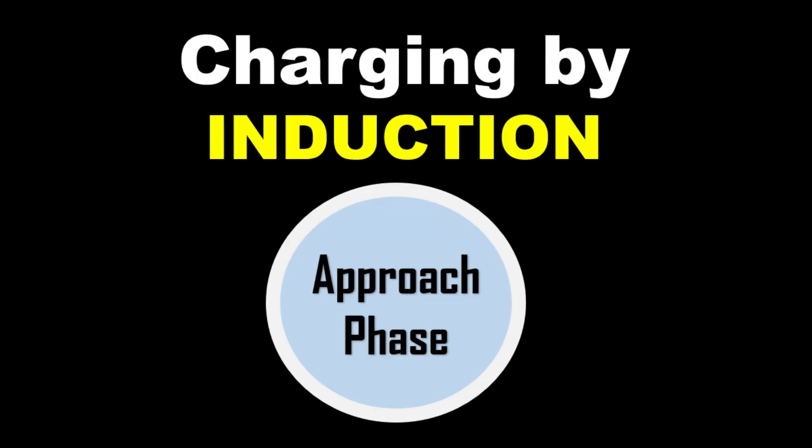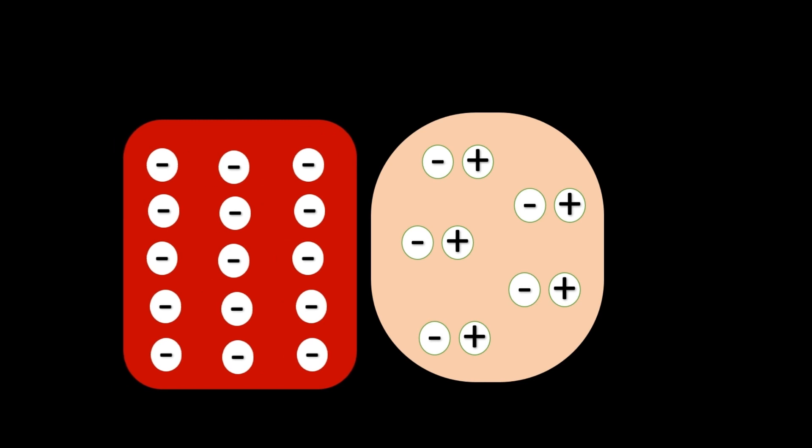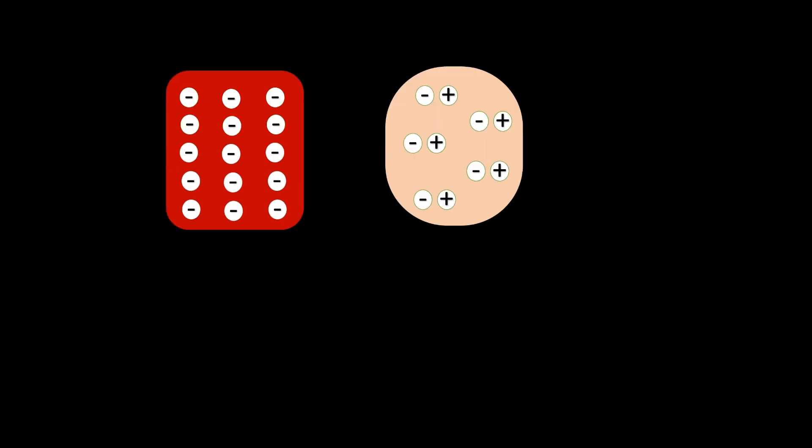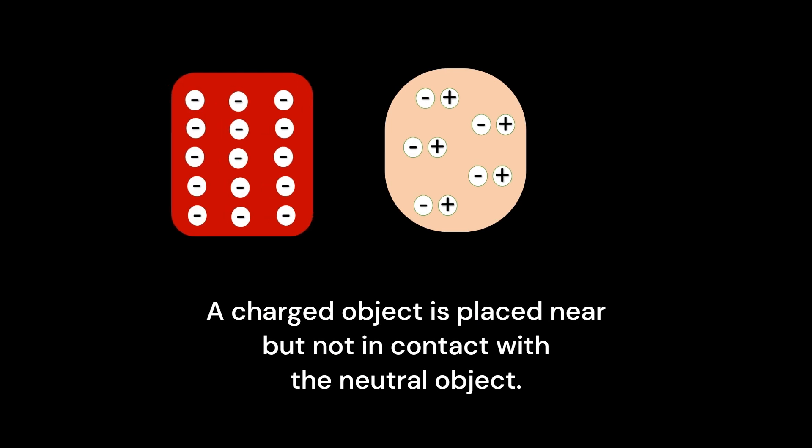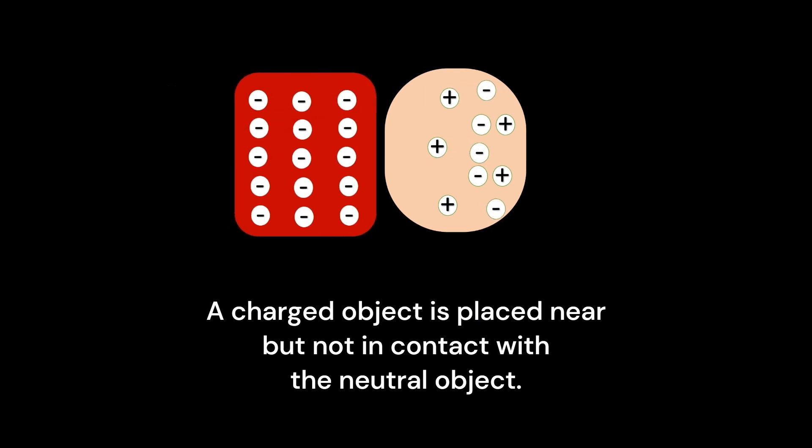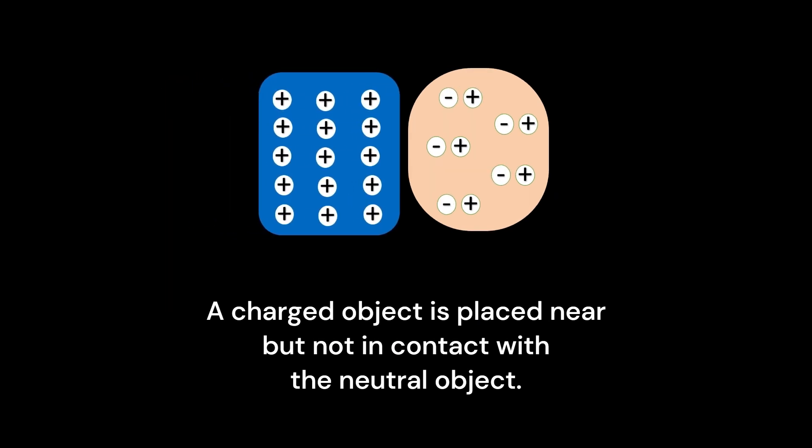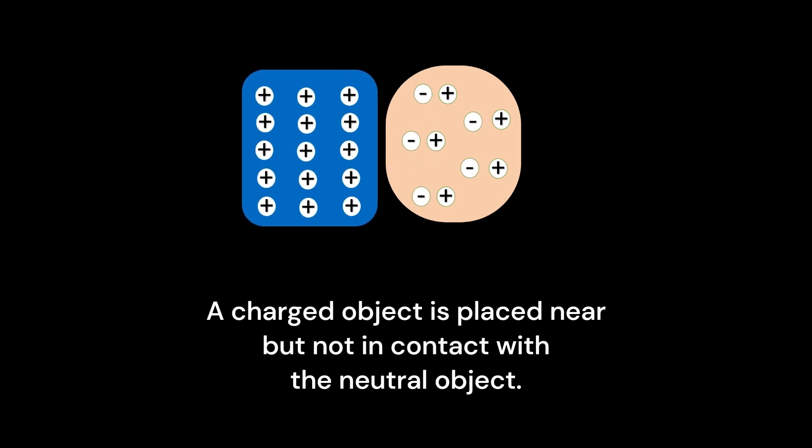In the approach phase, a charged object will be brought near but not in contact with a neutral object. Despite the space between these two objects, the charged object can still repel or attract the electrons in the neutral object, leading to the next phase, which is the polarization of the neutral object.